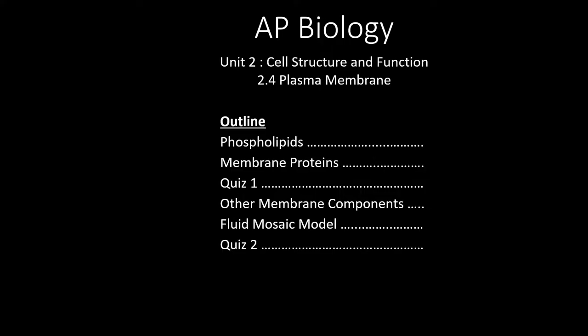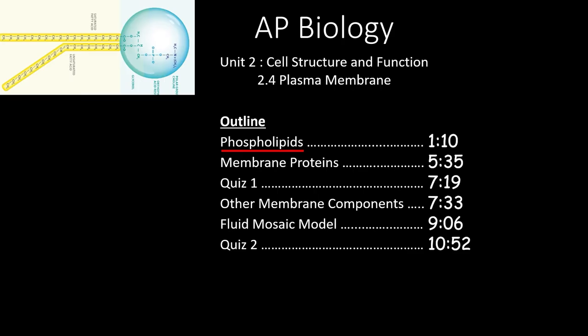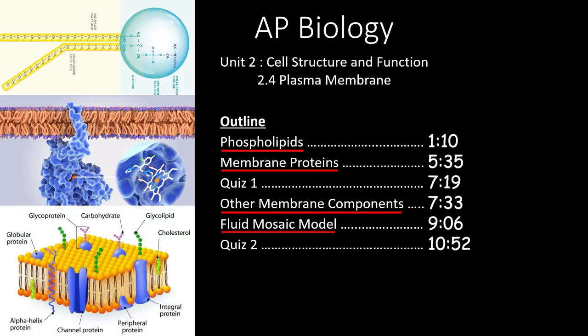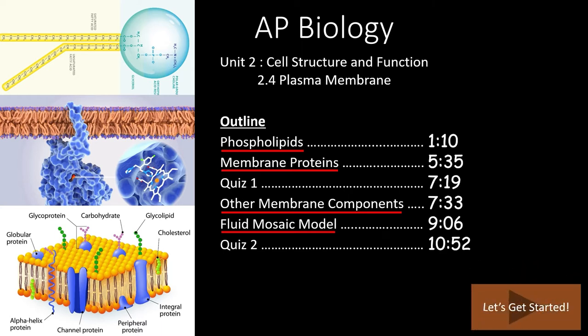In this video, we will cover the most important aspects of the plasma membrane. We will start with phospholipids and how they create a lipid bilayer. Then we'll move on to membrane proteins and how they create a living membrane. Finally, we'll look at some other membrane components and how all of these pieces come together to form the fluid mosaic model. These are the things you need to know before you take the AP test. If you need to quickly review any of these topics, feel free to skip to the times outlined below.